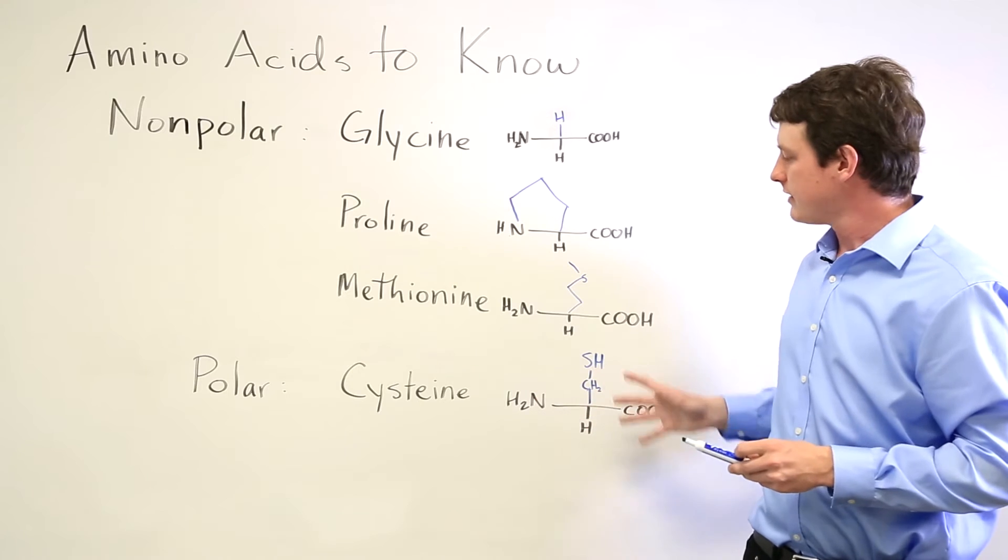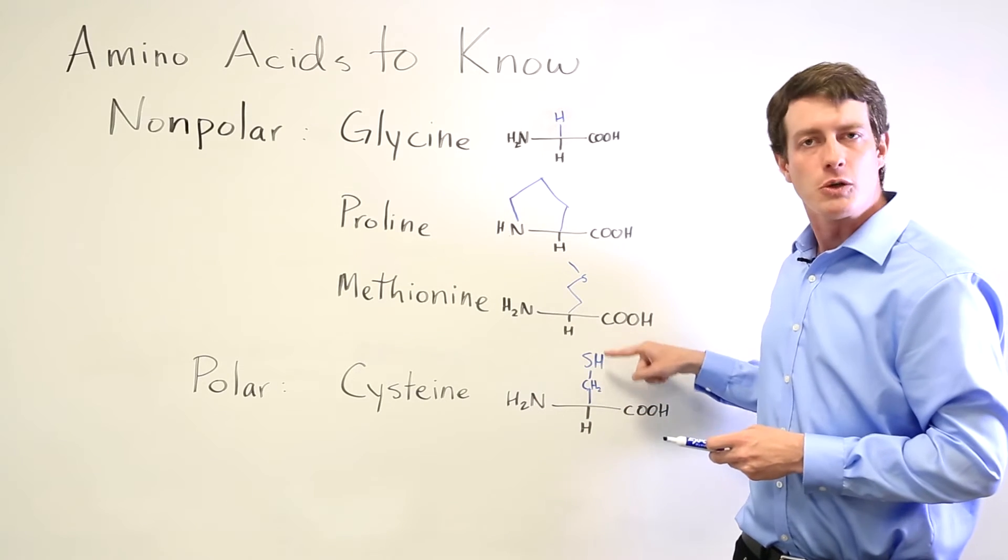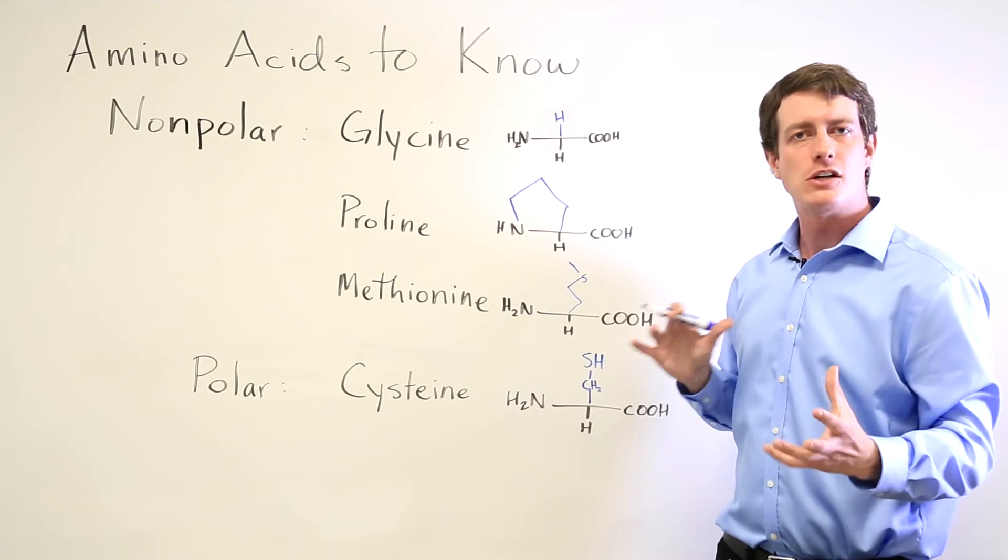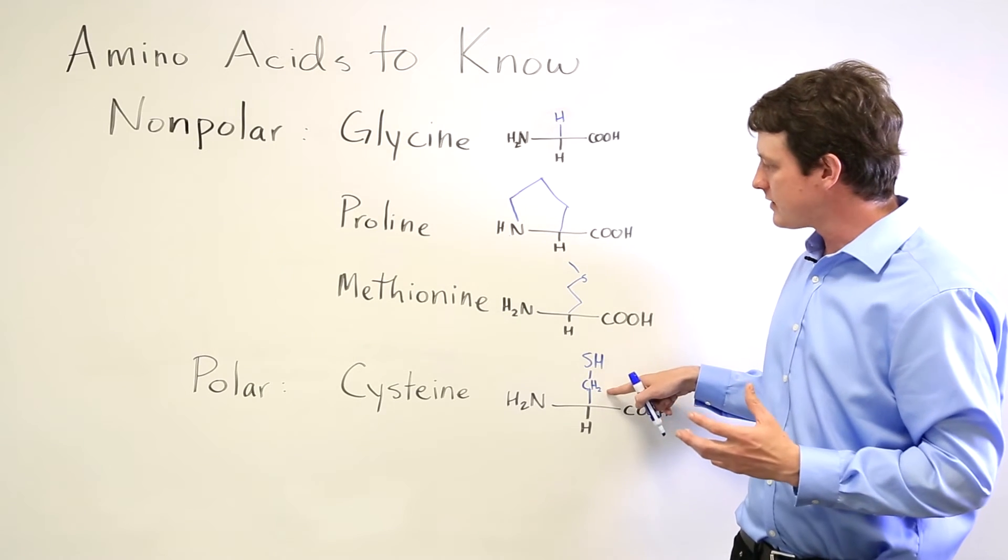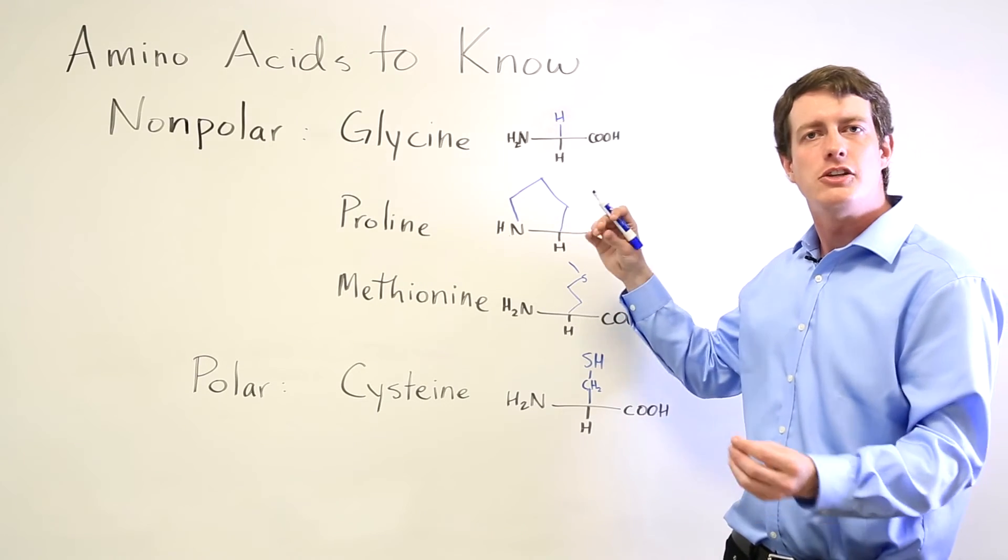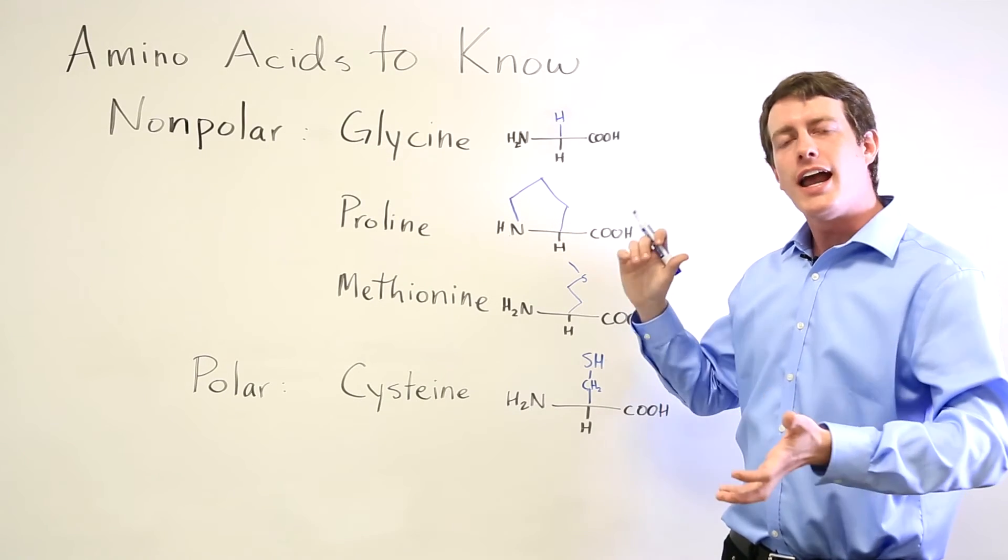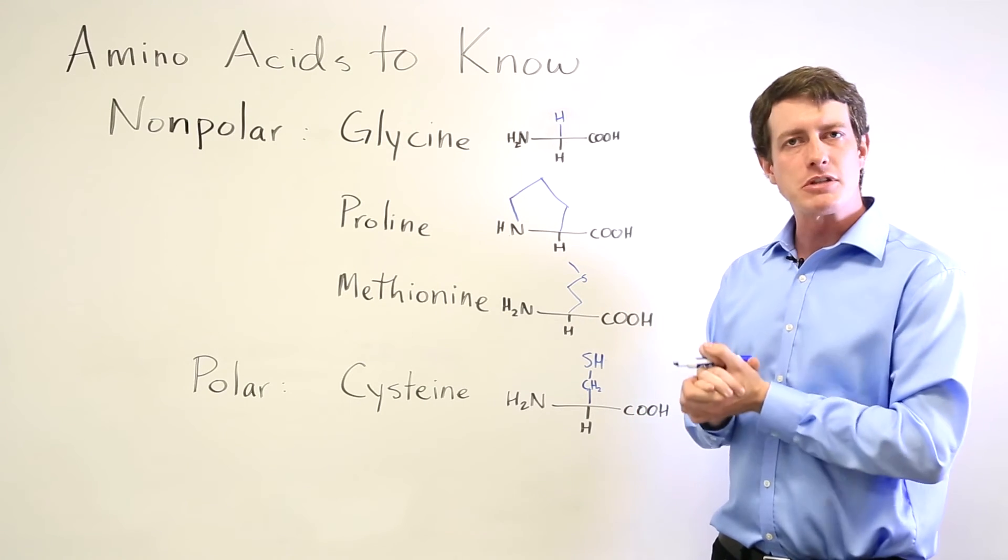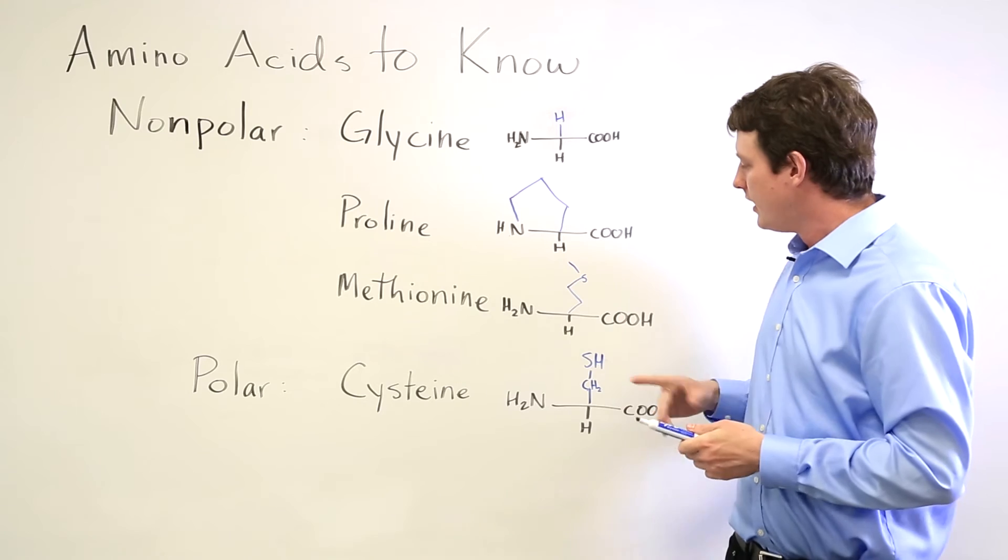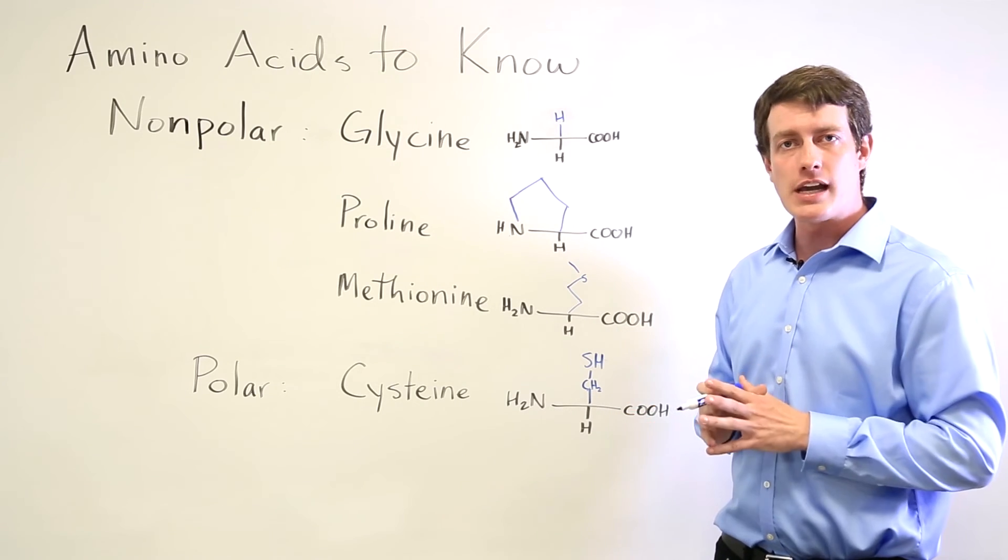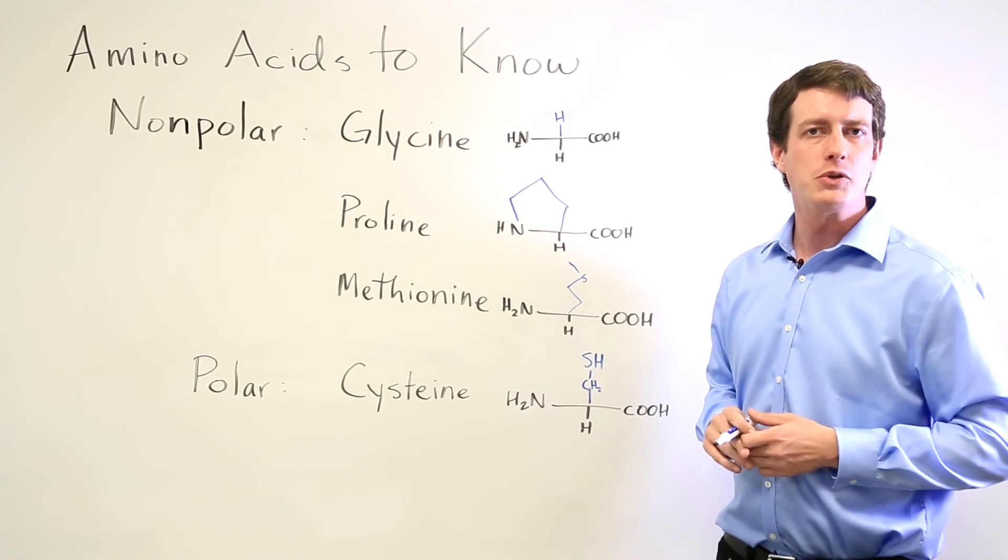And cysteine is an interesting one because it has this thiol group, the SH, and the SH enables it to form disulfide linkages. One cysteine on one side of the protein chain and one on the other can join their sulfurs together and that can be a very strong anchor point that really helps establish the tertiary structure of that protein. The disulfide bridge as they call it is something that you'll be encountering a lot when you examine the larger level structures of proteins.